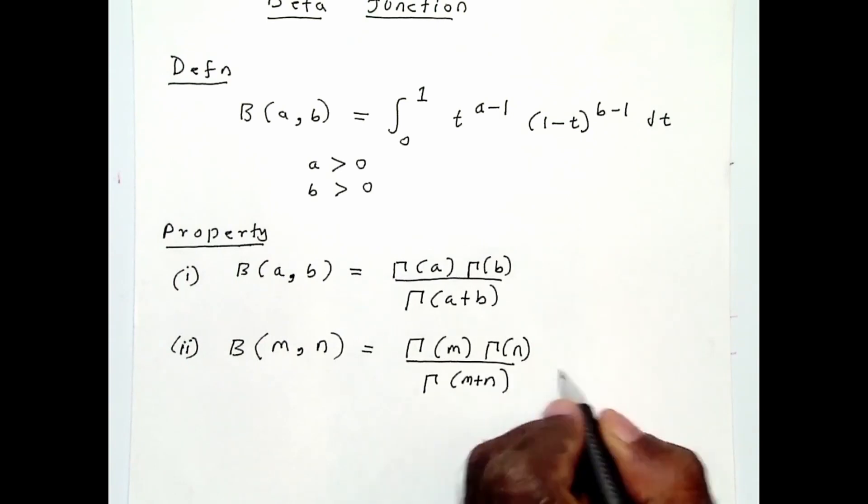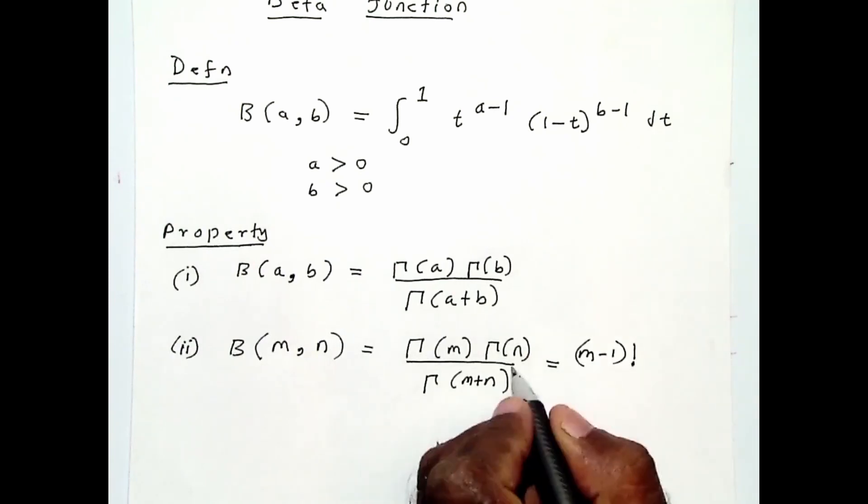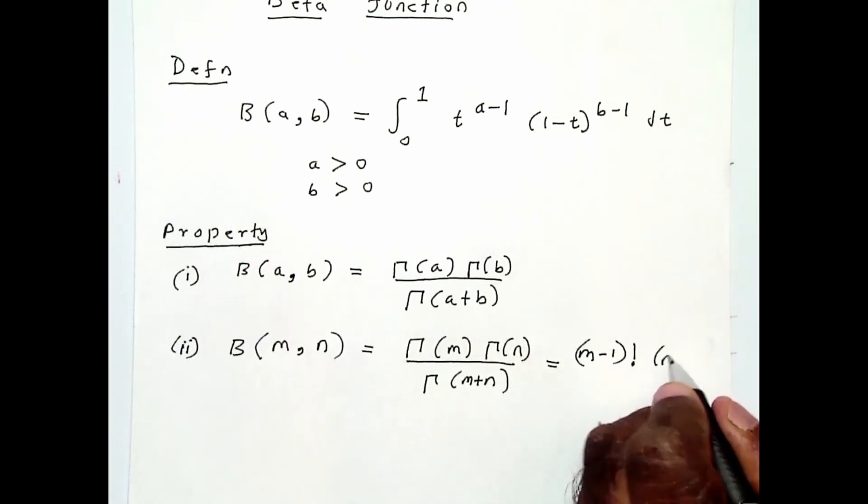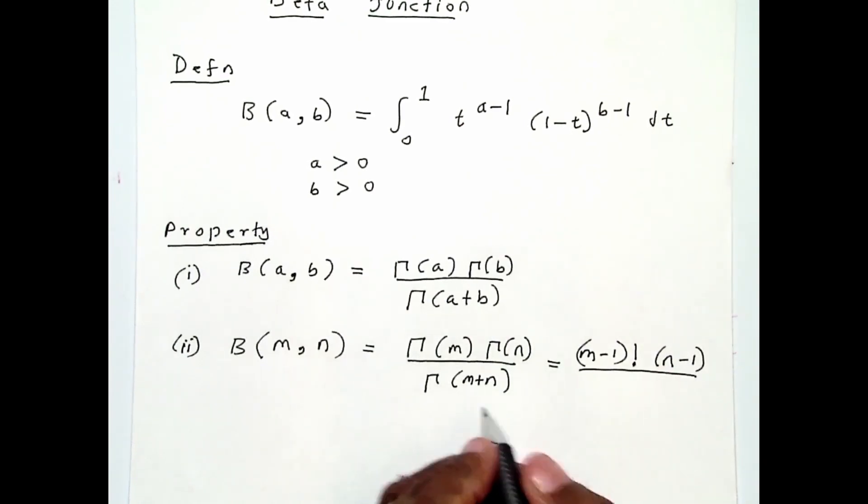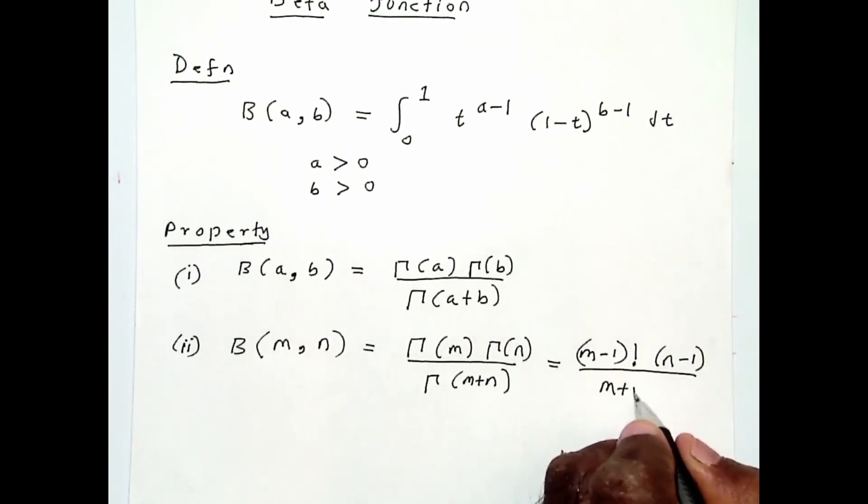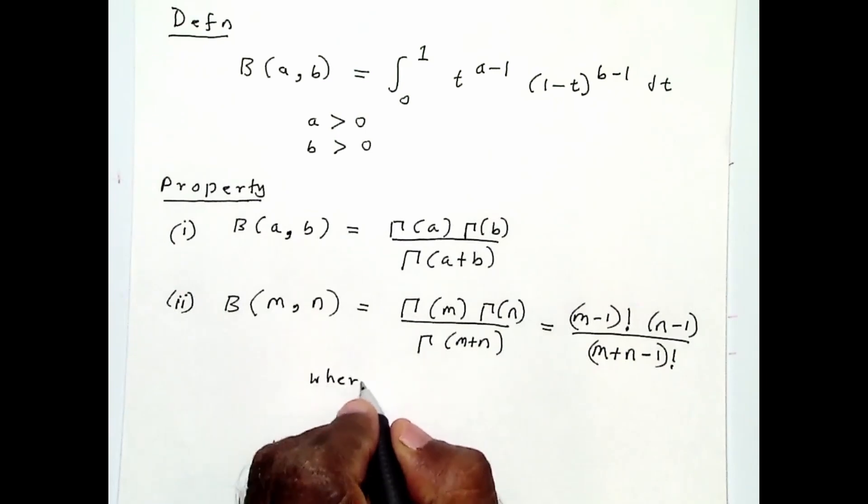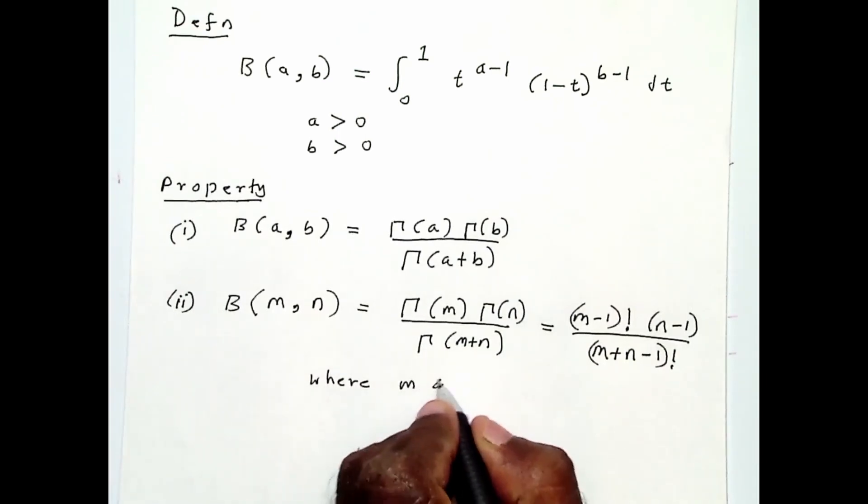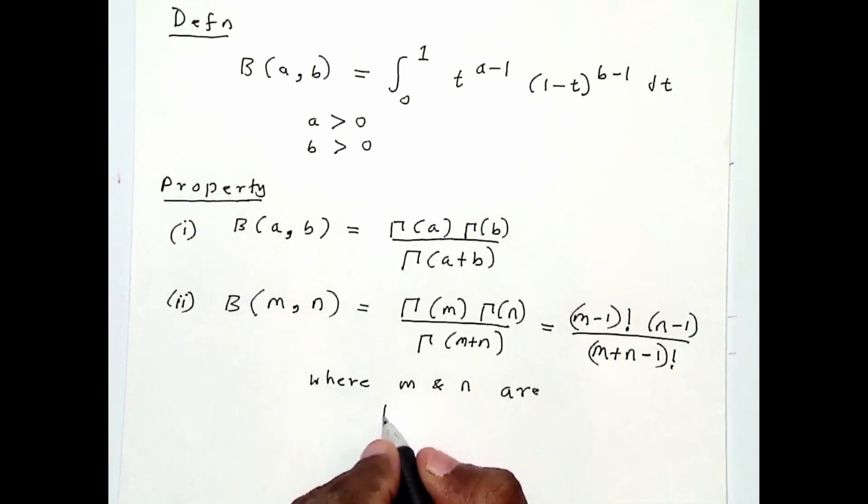You may know from the video on the gamma function that Γ(m) is (m-1)!, Γ(n) is (n-1)!, and Γ(m+n) is (m+n-1)!, where m and n are positive integers.